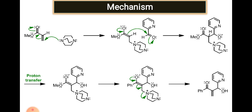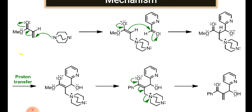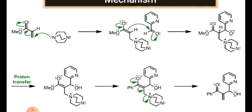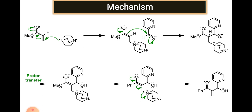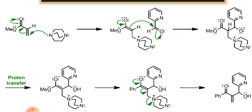This is the mechanism of the Baylis-Hillman reaction. The first step is conjugate addition. The activated alkene reacts with the DABCO. The lone pair of the nitrogen in DABCO reacts at the 1,4-position of the activated alkene. There is formation of an adduct — the first bond opens to the conjugated oxygen — and the alpha position of the activated molecule is directly reacted with the carbonyl carbon of the aldehyde or ketone.